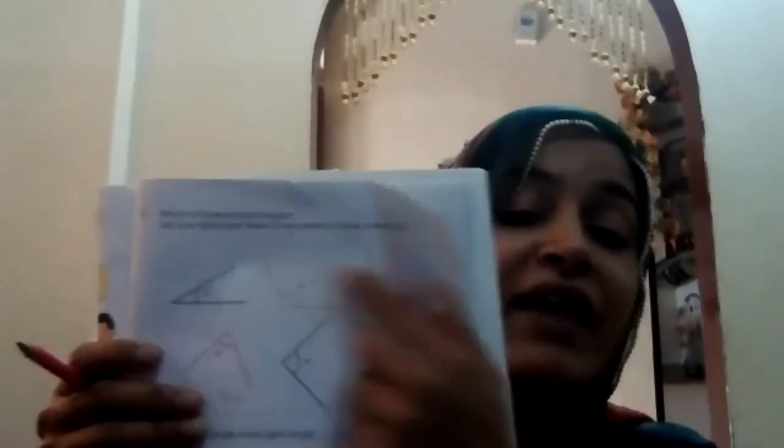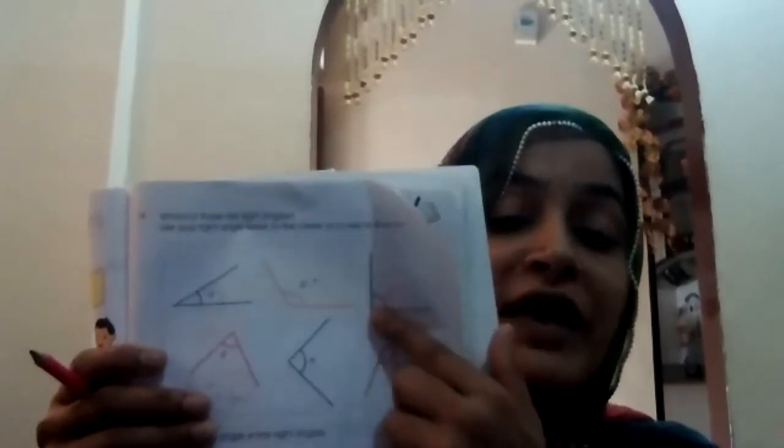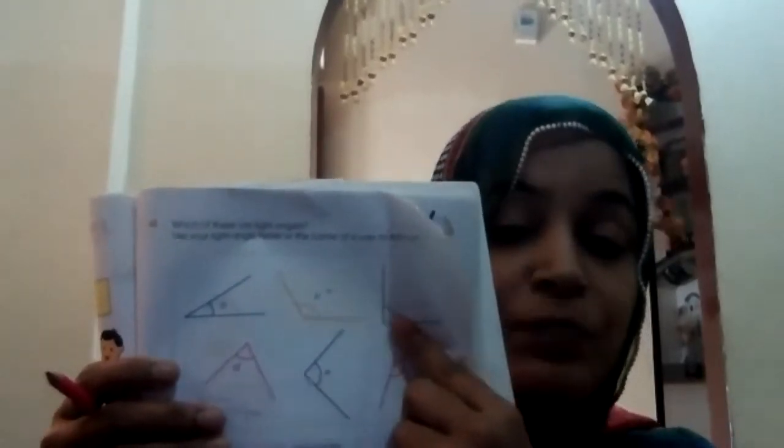Our question has been answered. Which angle is the right angle? Angle C and angle E — these two are the right angles.